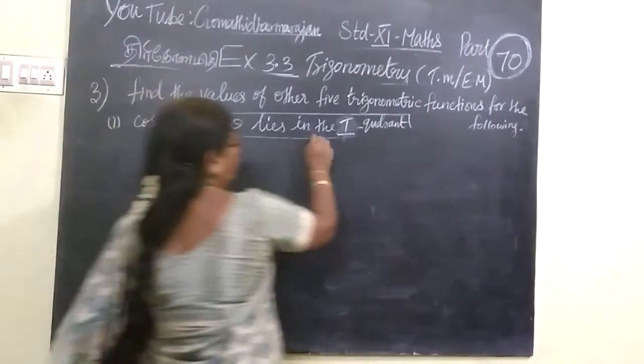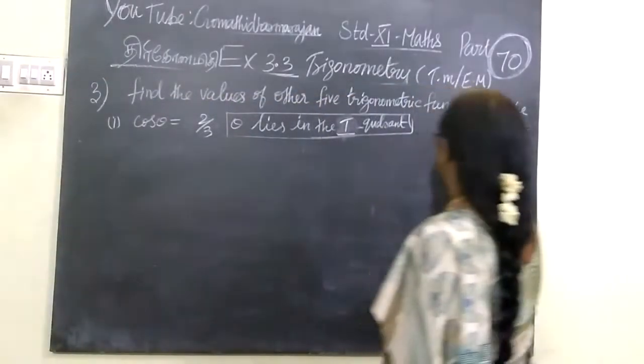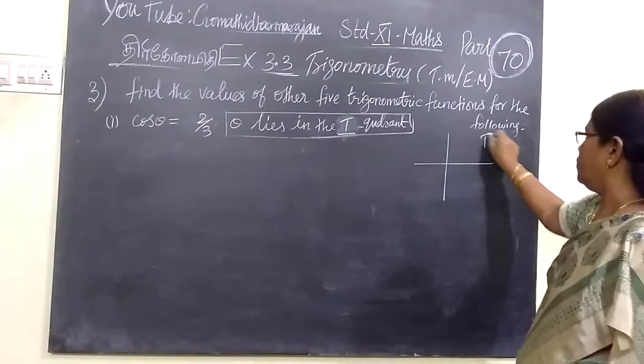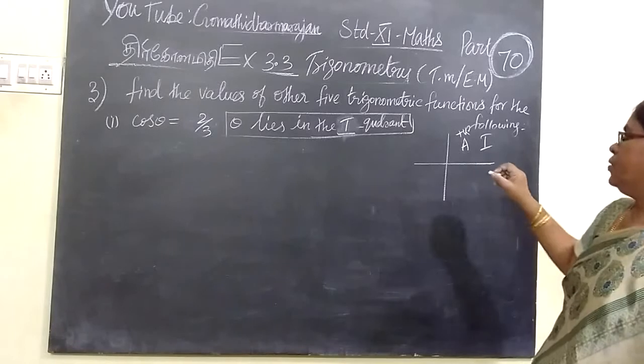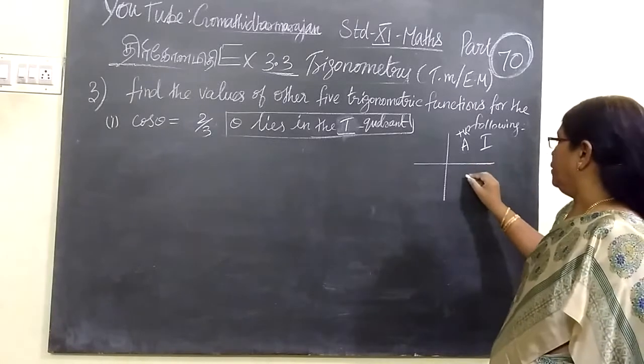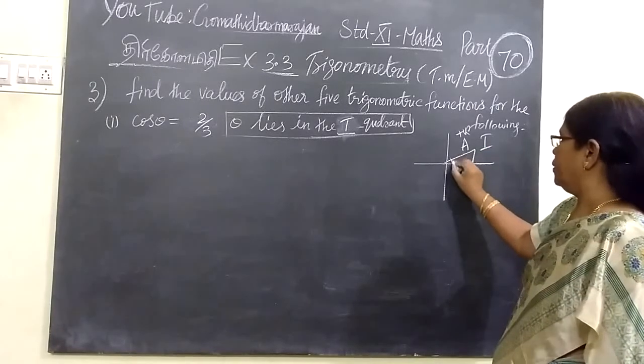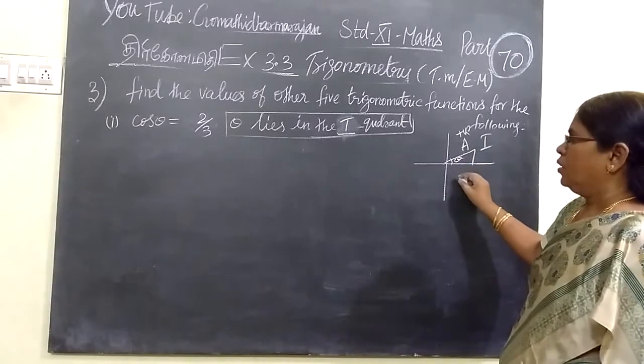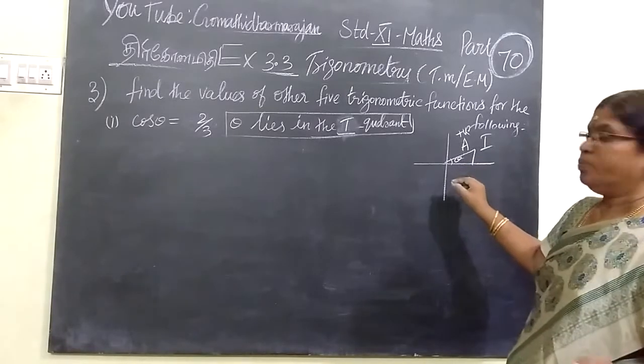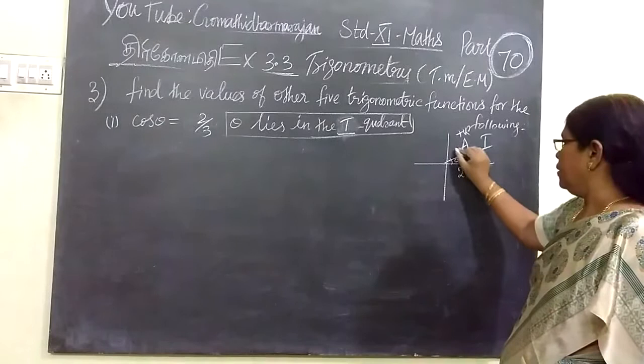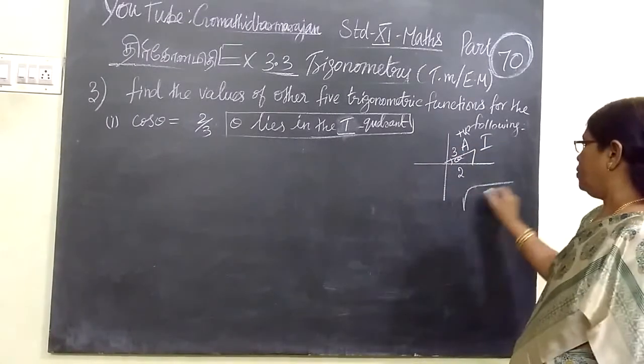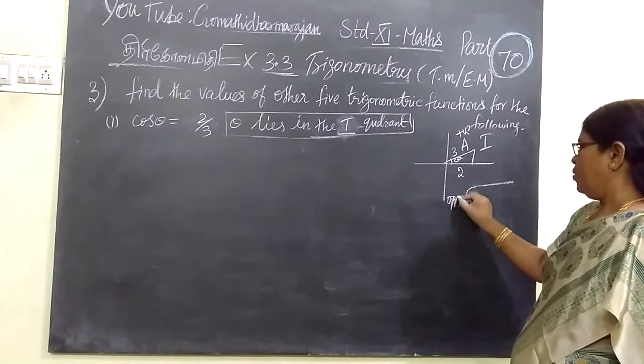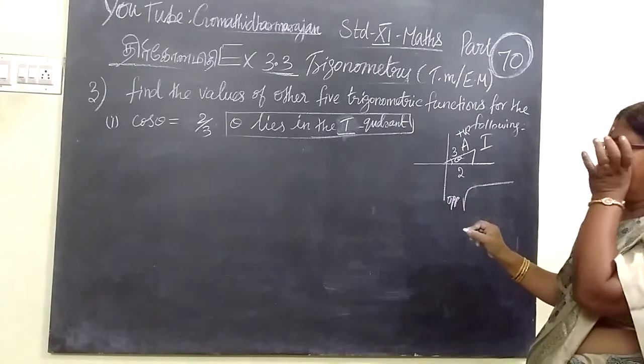Now it is given cos theta is equal to 2 by 3, theta lies in the first quadrant. So if first quadrant, all are positive. Now we want to find this. Theta will be cos theta equals adjacent by hypotenuse.